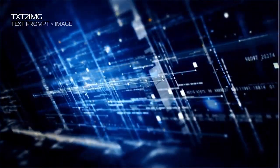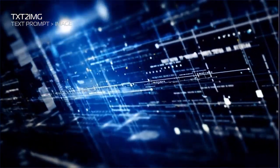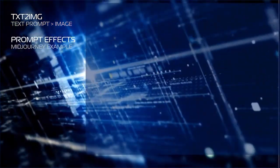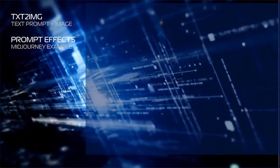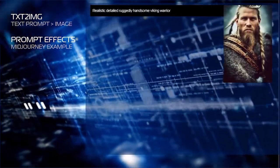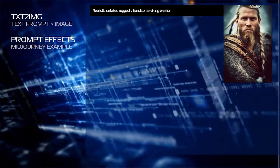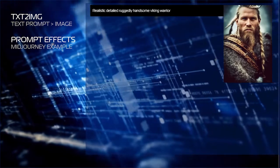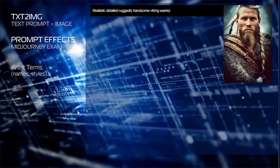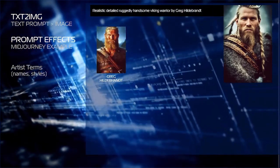One very important aspect of prompt writing is adding details — every term you give the prompt will change the image. Here are some prompt effect examples: 'realistic, detailed, ruggedly handsome Viking warrior.' Using the same seed number, we can get different results. Here I'm using artist terms — for example, 'a realistically detailed, ruggedly handsome Viking warrior by Greg Hildebrandt.'